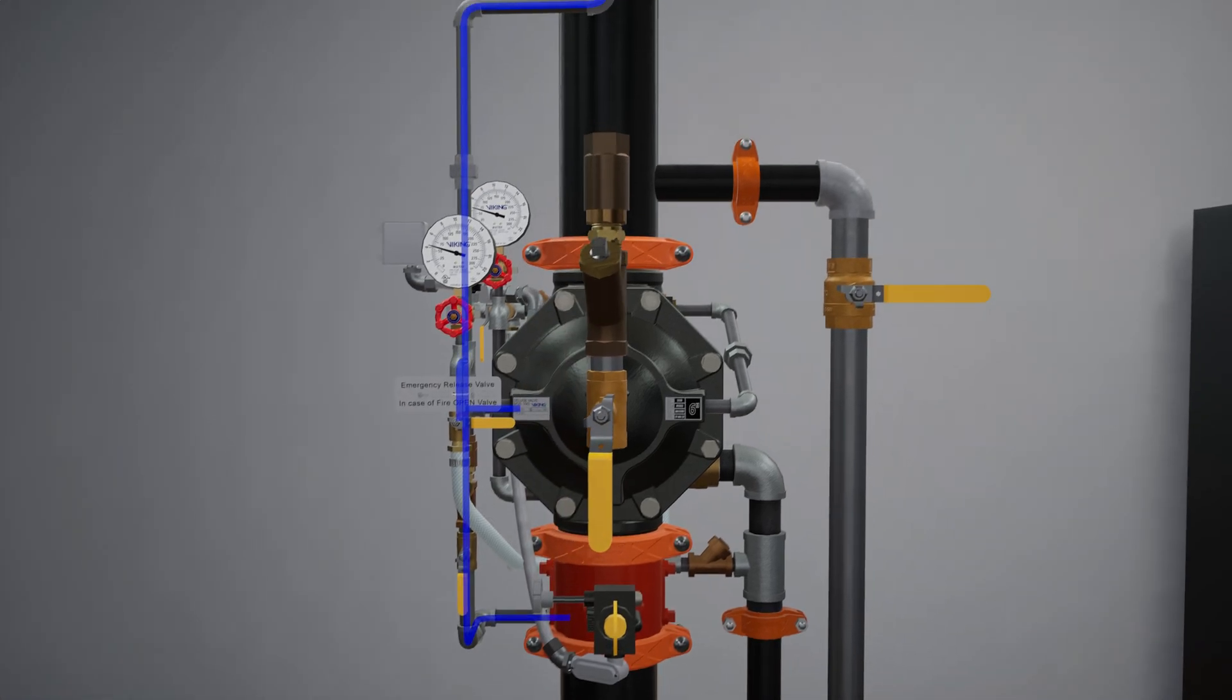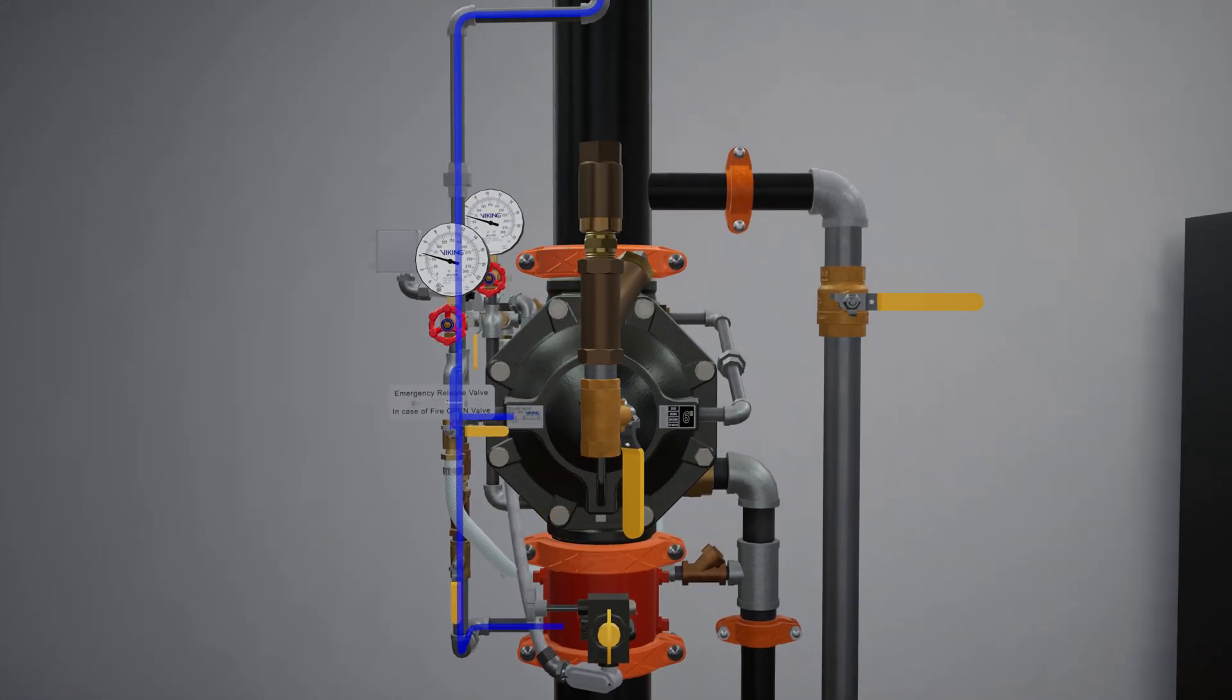The prime line directs water to the prime chamber of the Deluge Valve. The prime line consists of an open priming ball valve, a Y strainer, a restricted orifice, and a check valve.